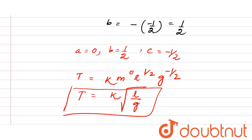So finally we have derived the expression for the time period: T = k√(l/g), where l is the length of the string, g is the acceleration due to gravity, and T is the time period. This is the expression for the time period of a simple pendulum.